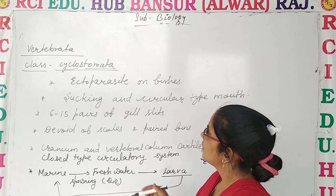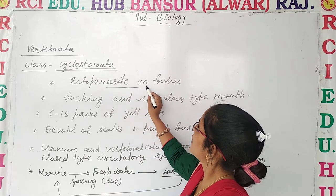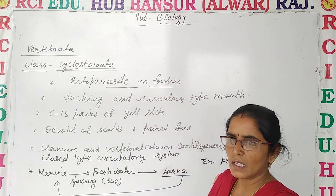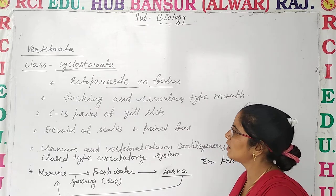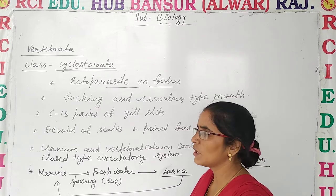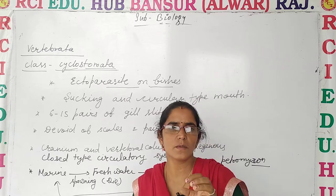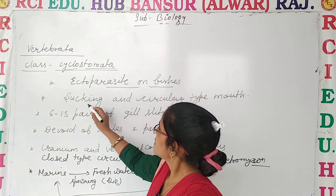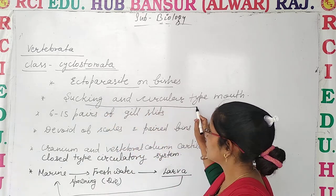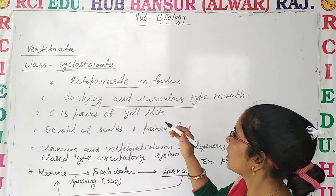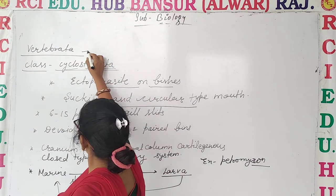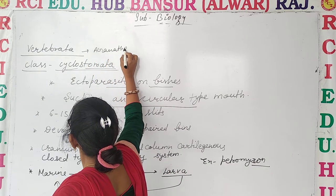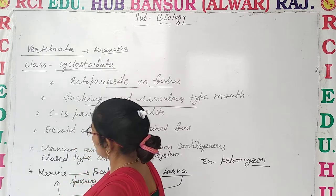These organisms are ectoparasites found in marine life — meaning they live in the sea and feed as ectoparasites, getting their food from the host. It is a sucking and circular type mouth. We have already read that Cyclostomata is a division of Vertebrata, and these organisms are ectoparasites with a sucking type of mouth.